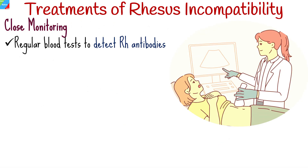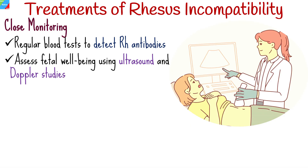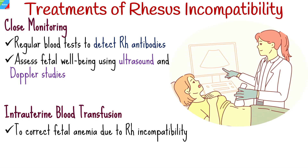Rh negative mothers with Rh incompatibility history are closely monitored during pregnancy. This involves regular blood tests to detect Rh antibodies and assess fetal well-being using ultrasound and Doppler studies. If fetal anemia occurs due to Rh incompatibility, intrauterine blood transfusion may be performed. This procedure involves delivering compatible donor blood into the fetal circulation to alleviate anemia and prevent complications such as hydrops fetalis.